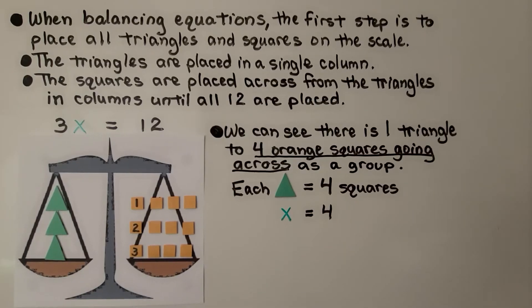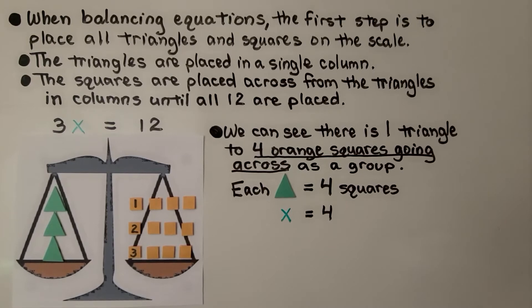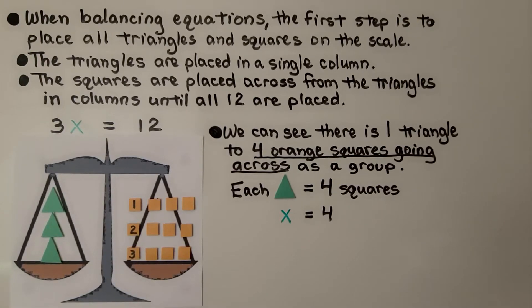When balancing equations, the first step is to place all triangles and squares on the scale. We have the triangles on one side and the squares on another. And the triangles are placed in a single column. We have three x, so we're going to go one, two, three.